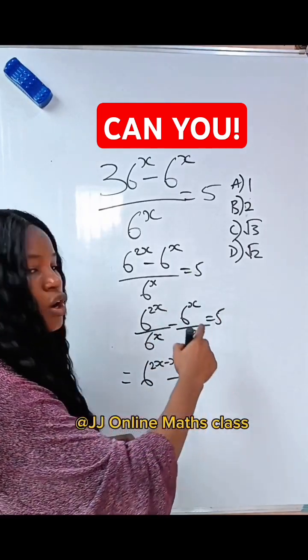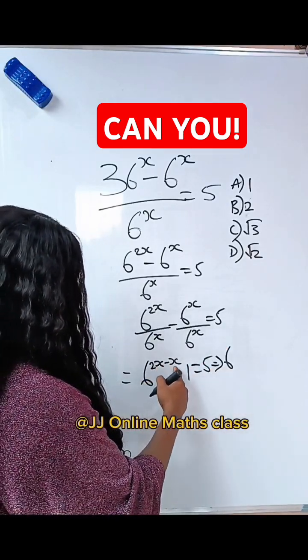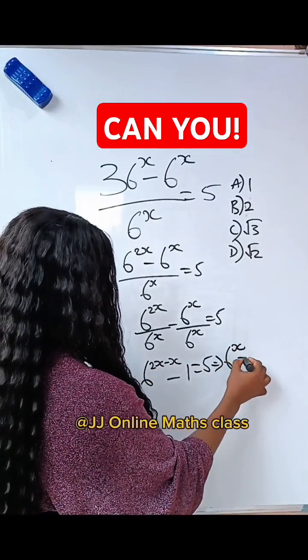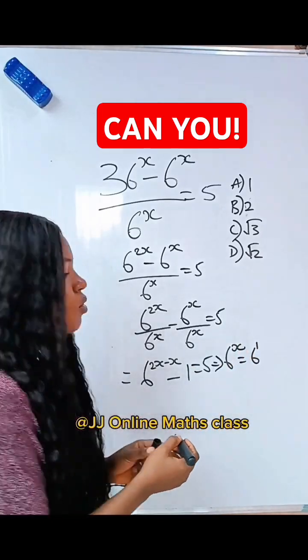Let's transfer this minus 1 to the other side and we have that 6 to the power of 2x minus x will give us x is equal to 5 plus 1 will give us 6. Now, this is written as 6 to the power of 1.